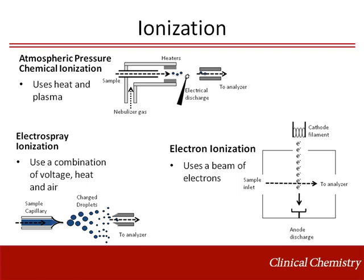If gas chromatography is used, the analyte is already in the gas phase, and an electron ionization source is used to generate a charged analyte. Electron ionization uses a beam of electrons that interact with molecules to form radical cations, which in turn often undergo fragmentation in the source to more stable species.